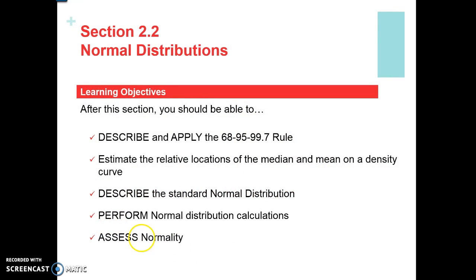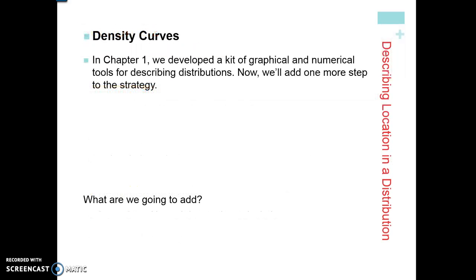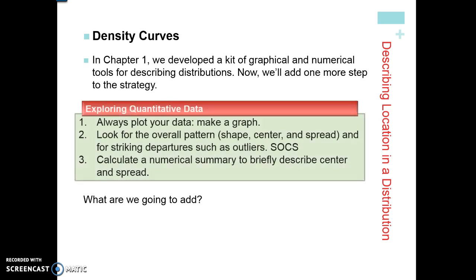In this section, we're just going to quickly take a look at describing the normal distribution and its characteristics. In chapter one, we took a look at a bunch of graphical and numerical summaries for describing distributions. We're going to add one more step to our strategy. Remember, when analyzing data, just showing numbers doesn't show a full picture, and just showing a graph doesn't either. We want both a graph and numerical summaries. We're going to use quantitative data throughout the rest of the course — that's data you can do math with: find the average, add, subtract, multiply, divide.